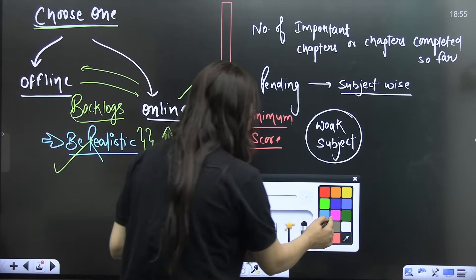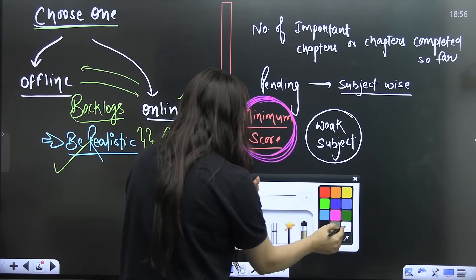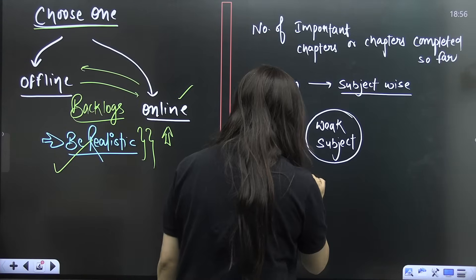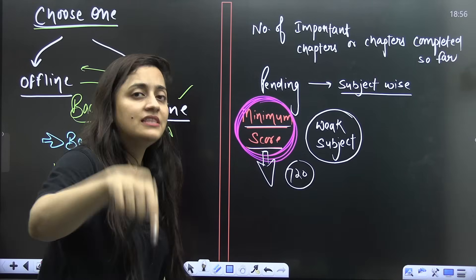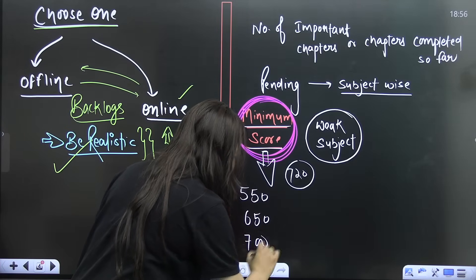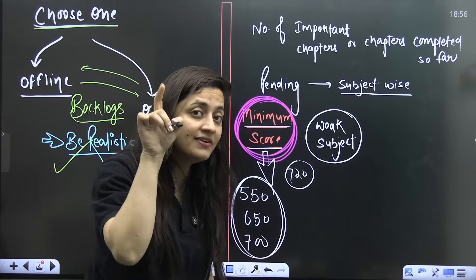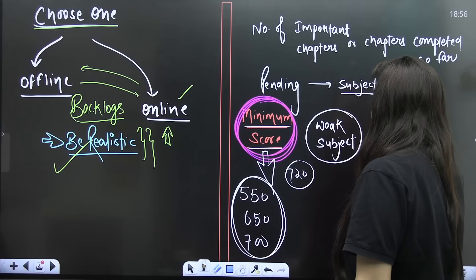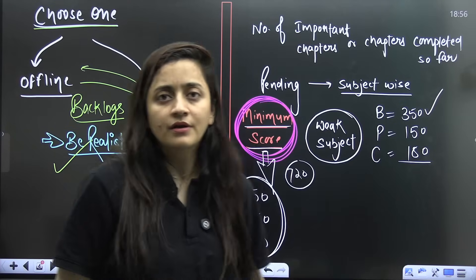You have to decide your minimum score. I never mention the maximum because maximum is 720 and you can aim for it. But by minimum score I mean the score you need to qualify this exam for an MBBS seat. If for you it's 550, prepare accordingly; if it's 650, prepare accordingly; if 700, prepare accordingly. When you're clear on your minimum score, you'll know how much to target in each subject — say 350 in biology, 150 in physics, 180 in chemistry.